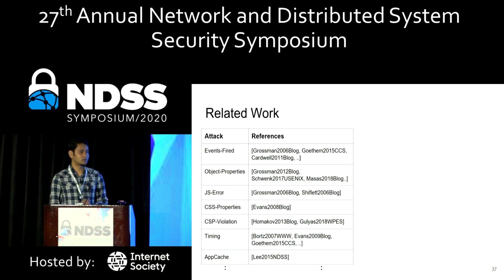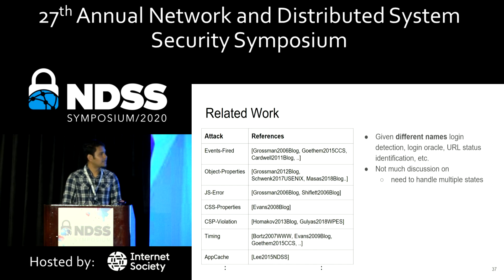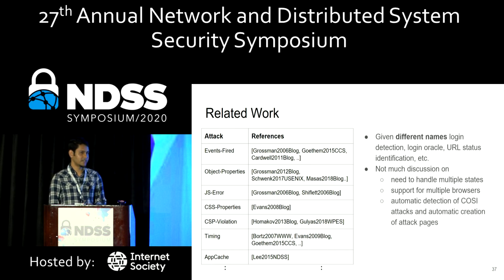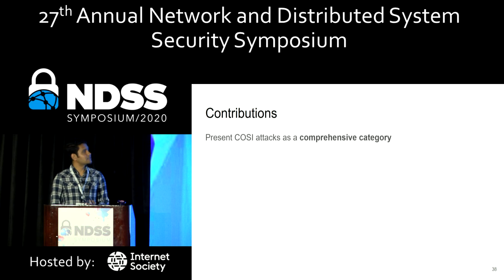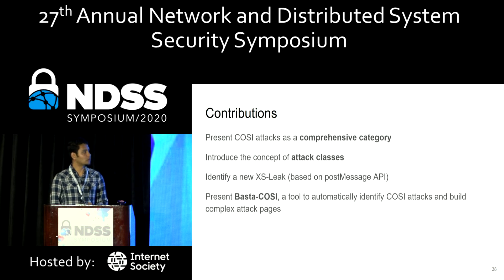There is a lot of related work on COSI attacks, but if you get into the details, they have always been called by different names based on the states being inferred, with little discussion on multi-browser support, combining different states, or automatically identifying and building attack pages. Our contributions address these gaps: we present COSI attacks as a comprehensive category, introduce the concept of COSI attack classes, identify a new cross-site leak based on the postMessage API, and present BASTA COSI — a tool to automatically identify COSI attacks on a website and automatically build complex attack pages.